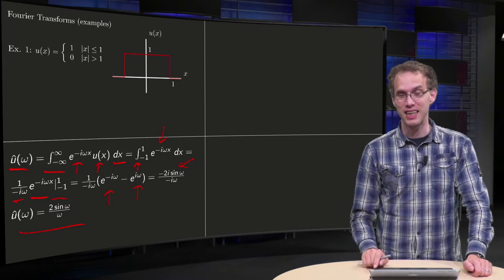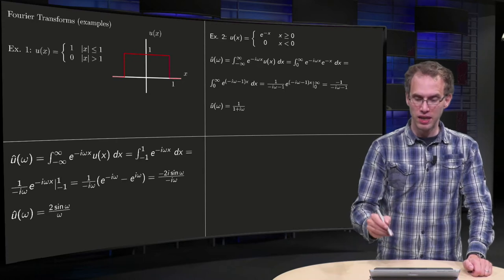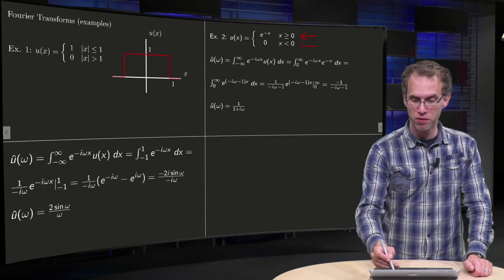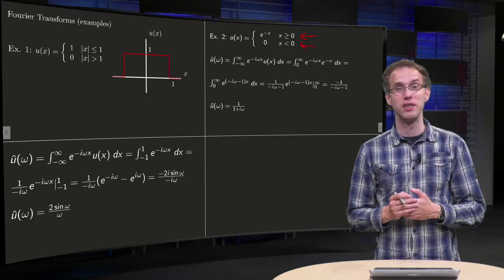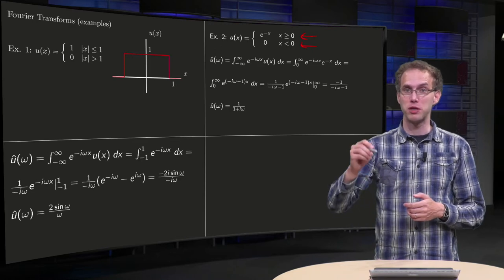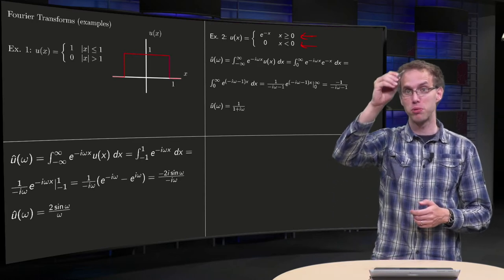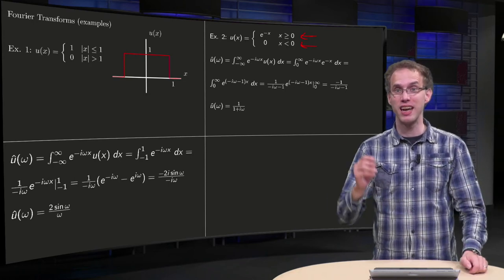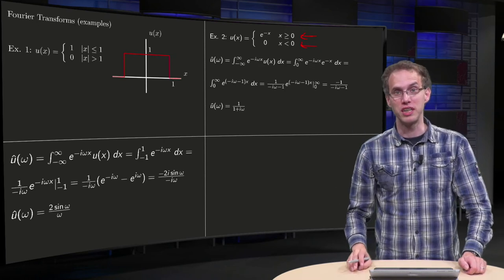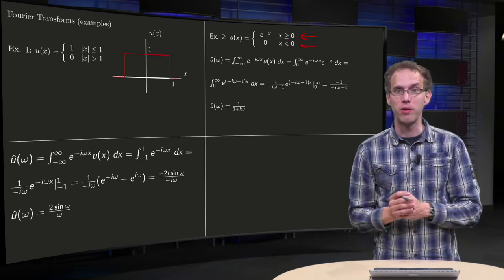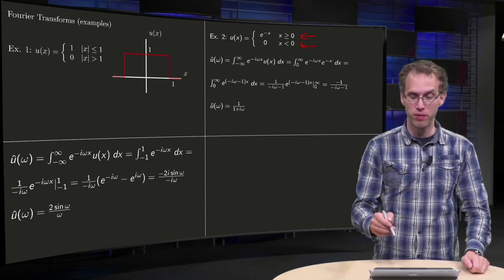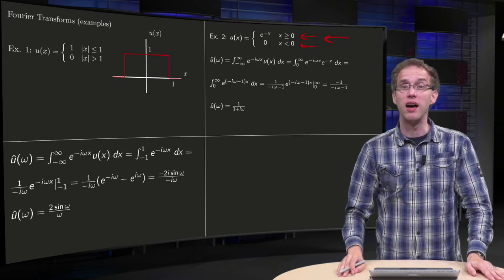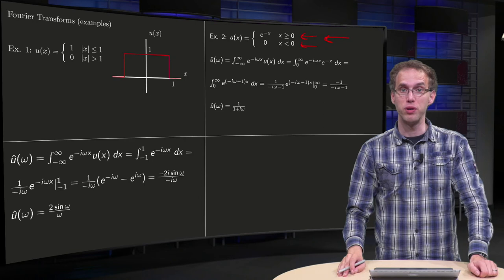Let's take a look at a second example. Now we take the exponentially decaying function for x positive, and 0 for x negative. Why can't we put the exponential everywhere? Well, the exponentially decaying function for x positive goes down to 0, so you can integrate it. If you also take it for x negative, it blows up and the integral does not exist. So we cannot compute the Fourier transform of that one, but we can use this one, because the integral of u is finite.